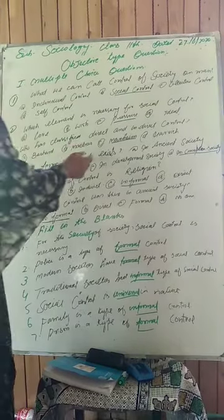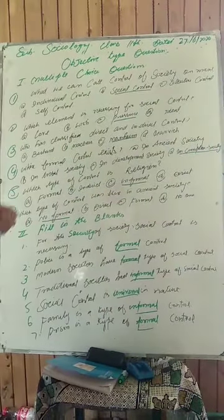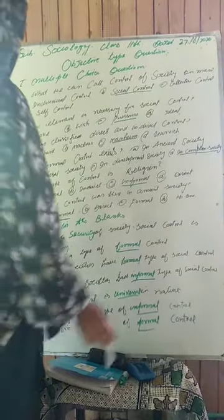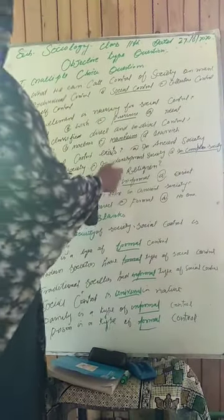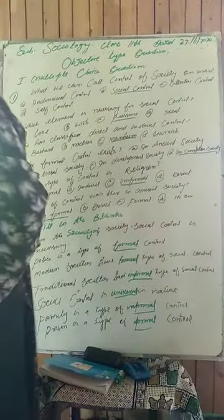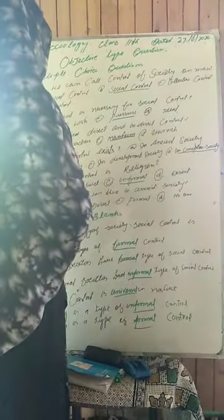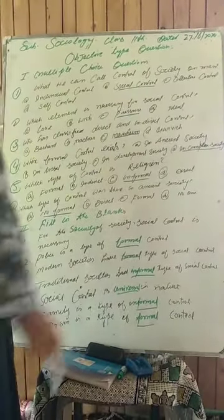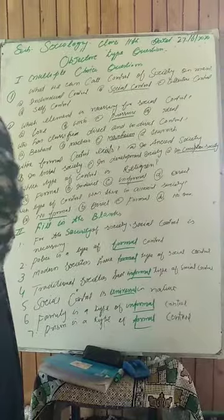Now move towards next one. Where does formal control exist? Joh formal control hai, woh kahan exist hota hai? Whether it exists in ancient societies, tribal society, development society, or complex society. Formal control exists in complex society. That means D is correct. Formal control complex society mein exist hota hai.